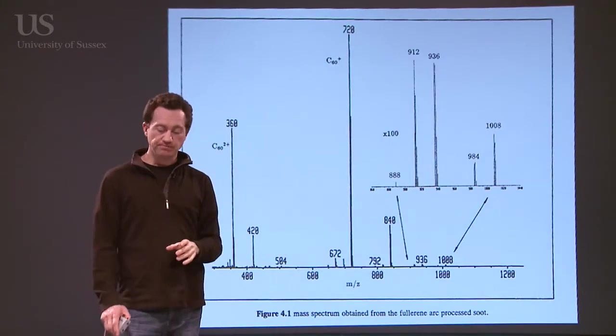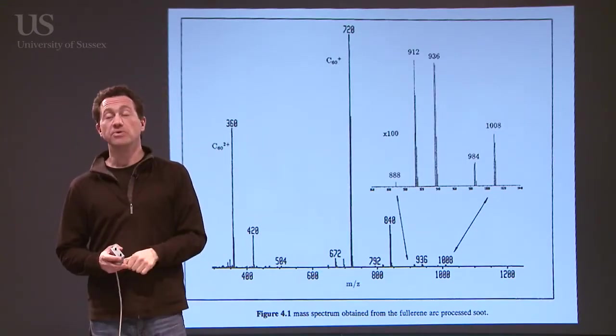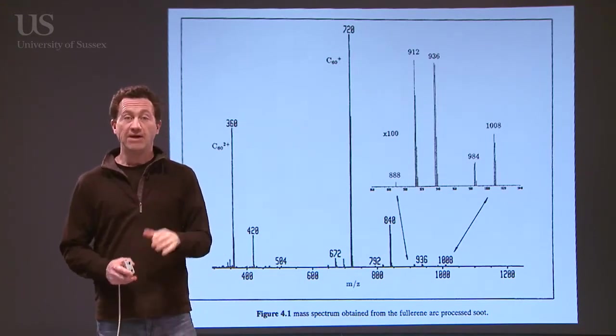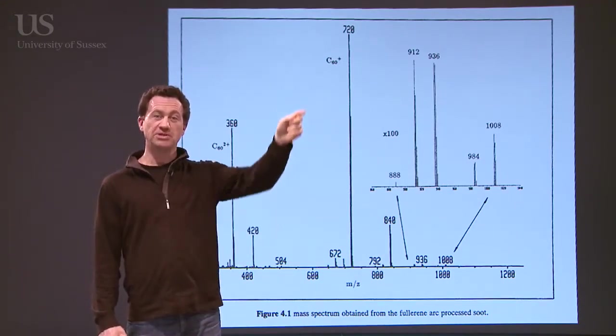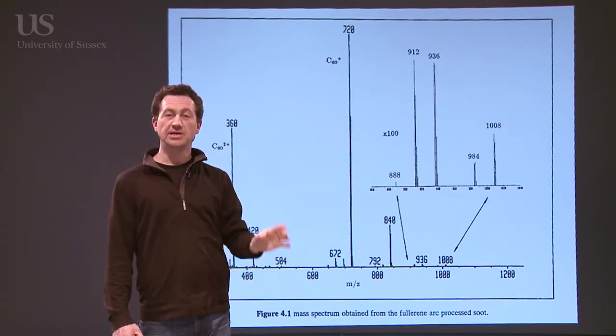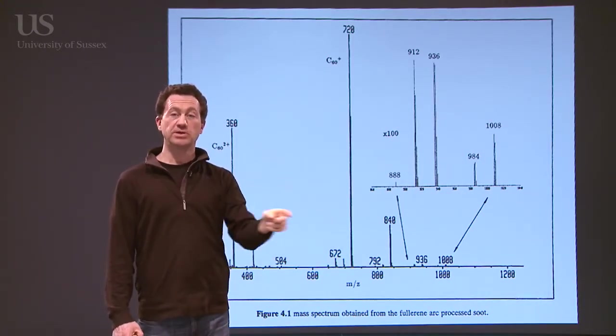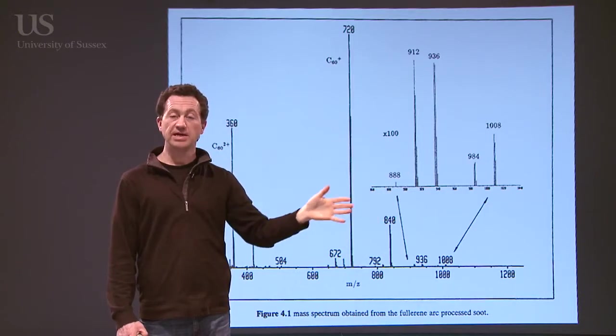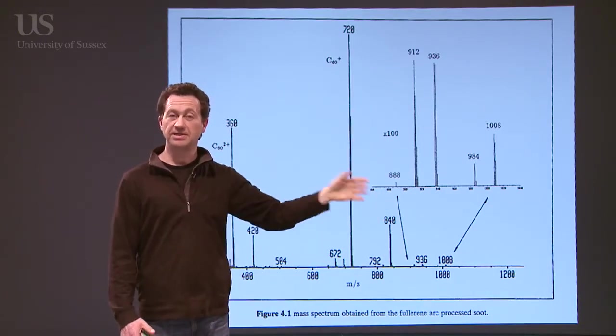Behind me is a spectra of the raw material that we make when we make C60. And right at the center here, you see this enormous peak for C60 corresponding to 720 mass units. So that's in the right place. We also see C70 over here. And actually, there are other stuff in it, but we'll come back to that in a minute.